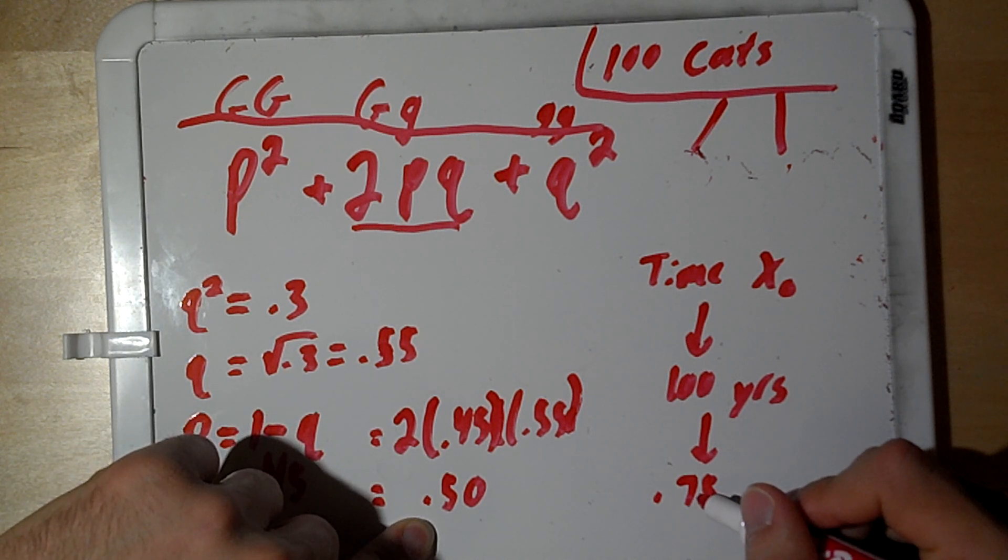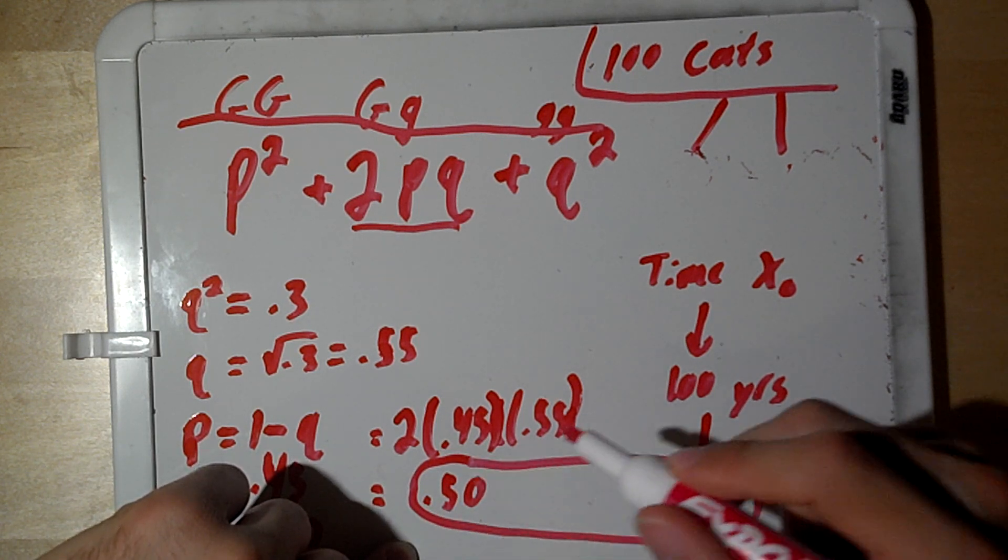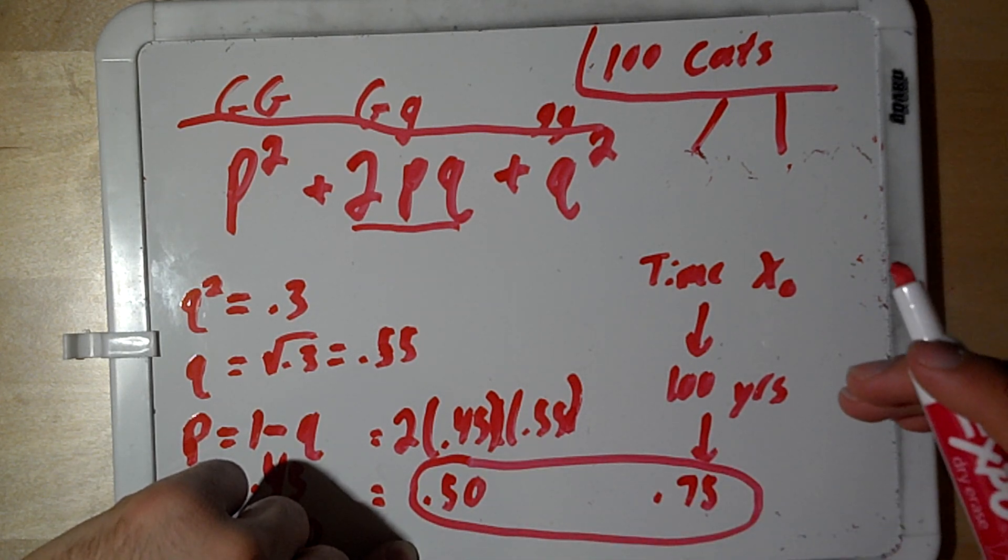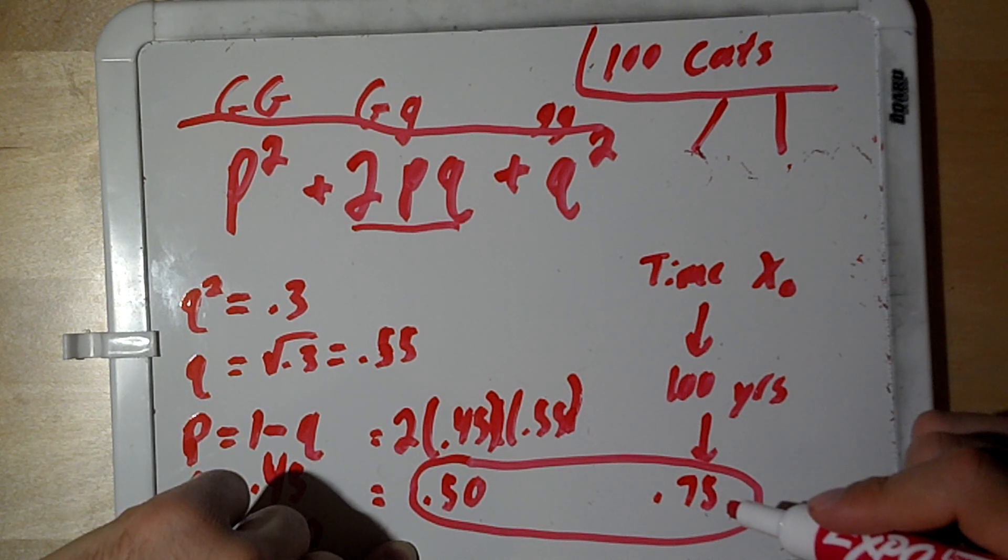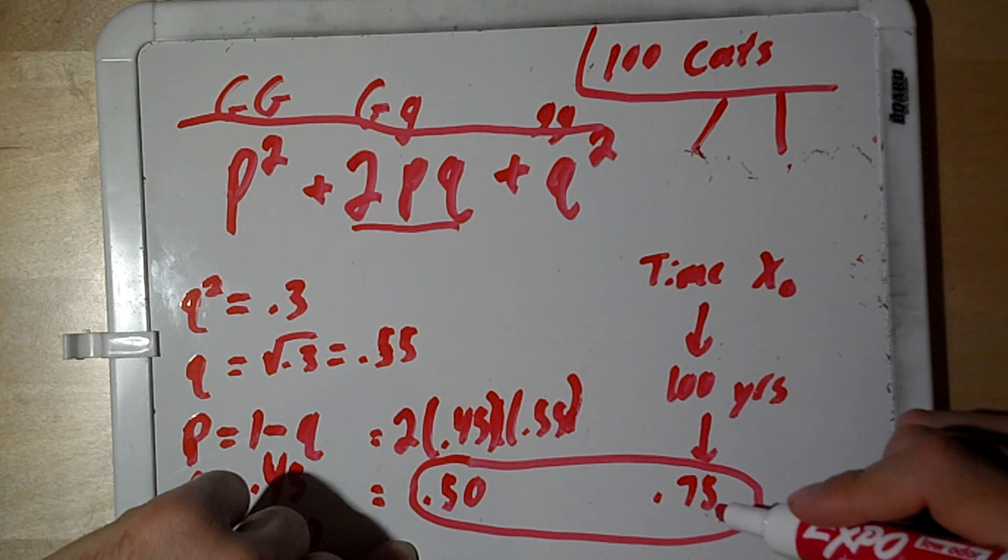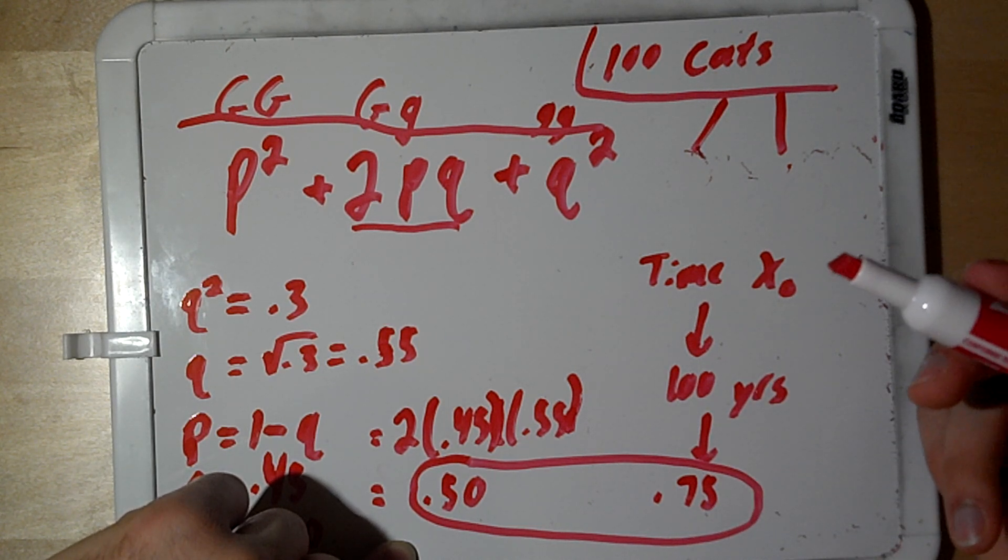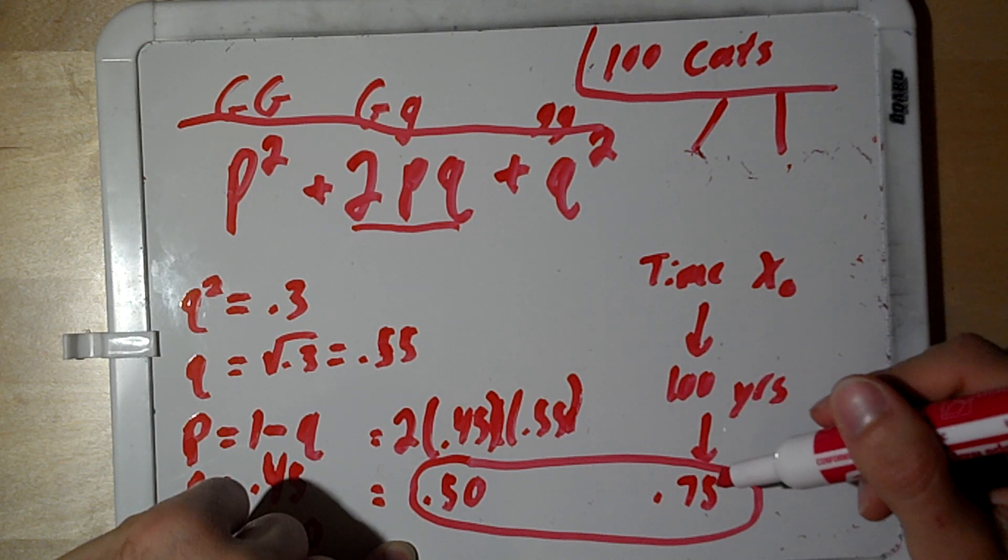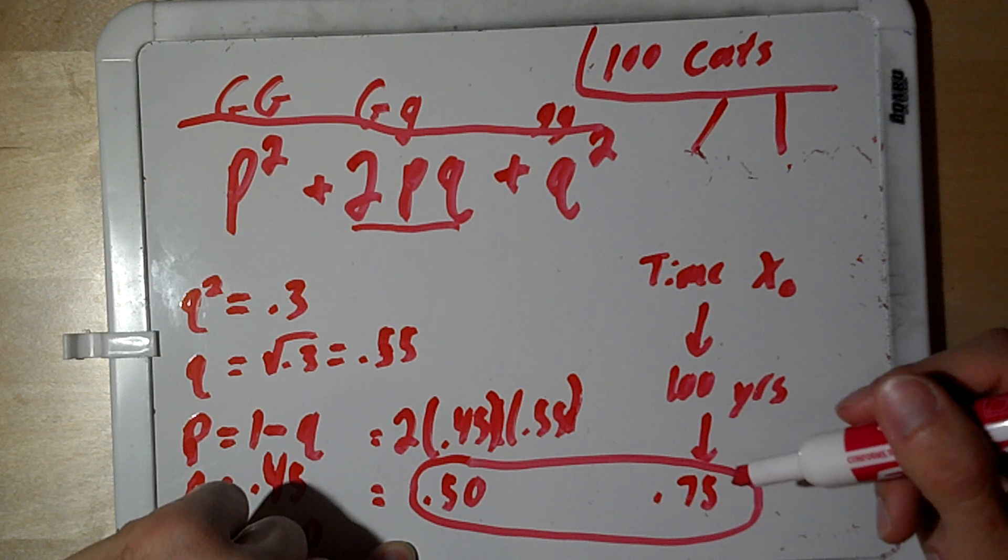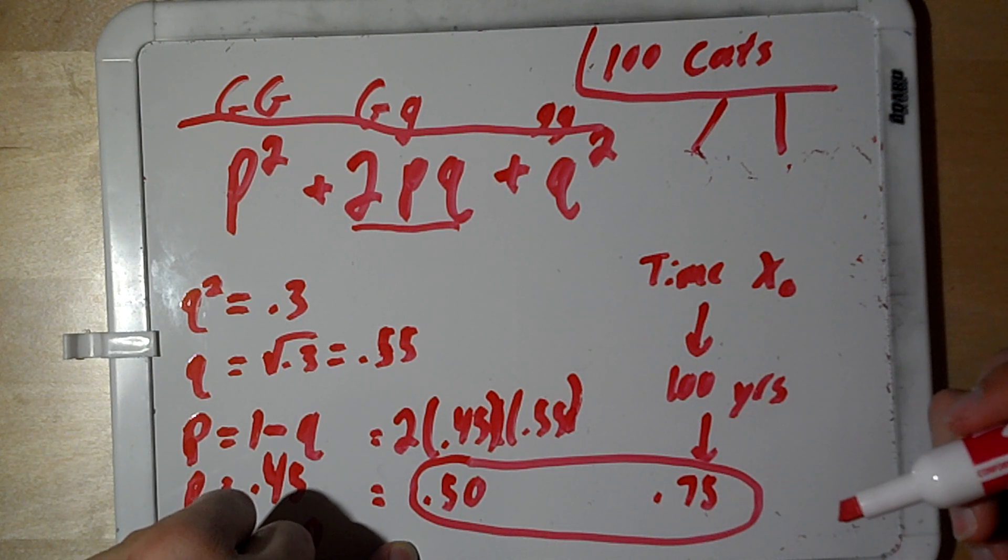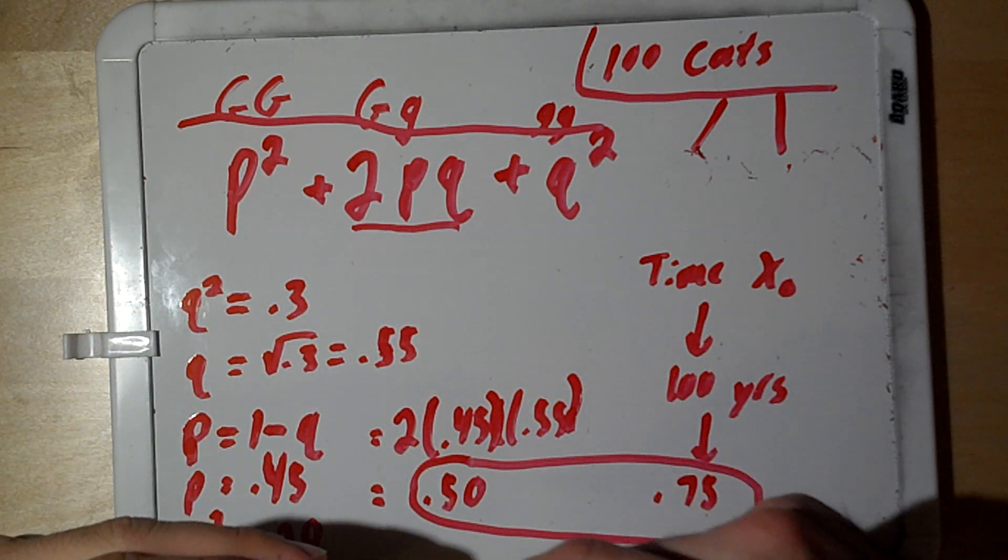We can see, we can say that there's a clear difference between 0.50 and 0.75. Therefore, in this particular population of 100 cats, the allele frequencies have changed. And by the definition of evolution, which is defined as a change of allele frequency over time, we can infer that there is some kind of evolutionary event occurring within this population. And this is essentially what the Hardy-Weinberg principle is used for in ecology and evolution.